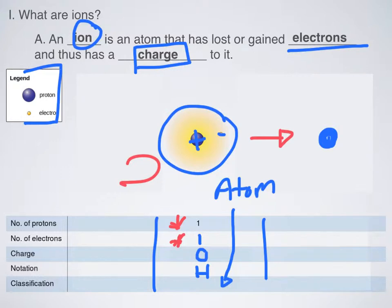Now let's calculate all of our stuff again. How many protons do I have in my picture? Obviously, I have one. How many electrons? Zero. What would my charge be? Given the fact that protons are positively charged and electrons are negatively charged, if I only have a proton, I have a plus one ion.